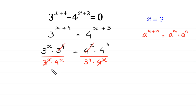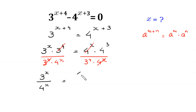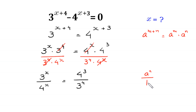So at the left side we have 3 to the power x divided by 4 to the power x, and at the right side we have 4 to the power 3 divided by 3 to the power 4. By using the power rule a to the power n divided by b to the power n equals a over b whole to the power n.